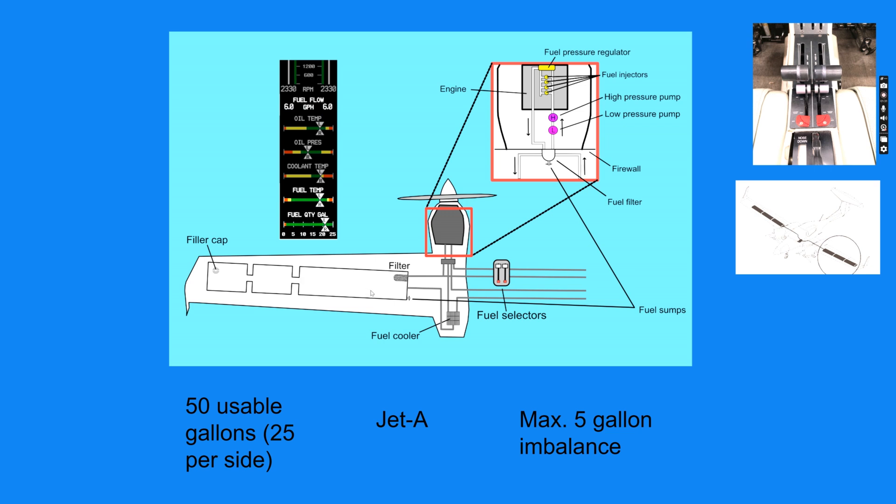So on each side, there's this wing tank. The wing tank has a filter here, a sump at the bottom. Fuel leaves the tank and goes to a fuel selector valve. That's what's controlled by the fuel selector levers in the cockpit here. Fuel goes to the engine through a filter here. There's another sump in the engine nacelle.